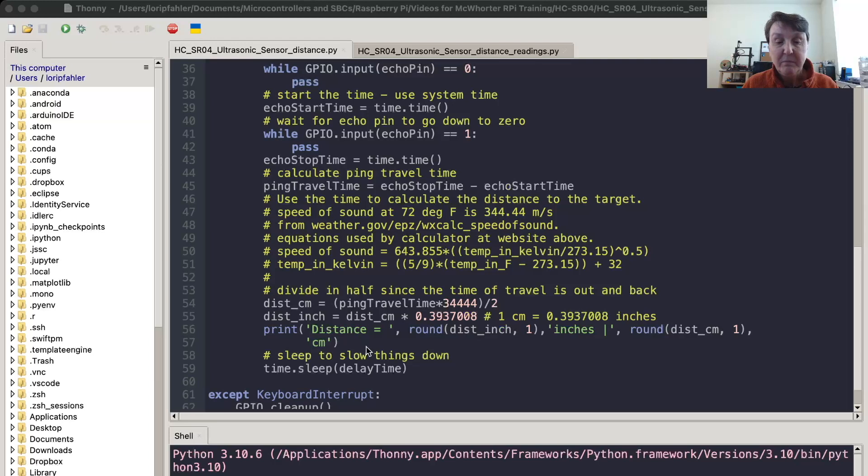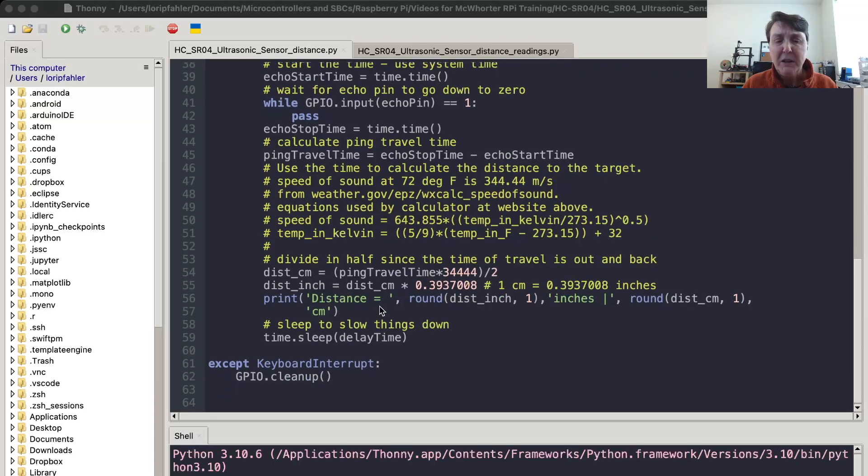I also converted that into inches. Printed that to the screen. Then the delay time to slow it down just a little bit. It'll start over and take another reading. We'll leave the program using a keyboard interrupt. We'll do our GPIO cleanup.